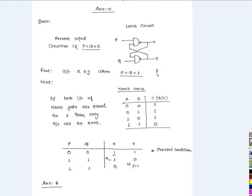This is a digital circuit. The input port has inputs P and Q, and the output port has outputs X and Y. We need to find the output of X and Y when P equals Q equals 1.